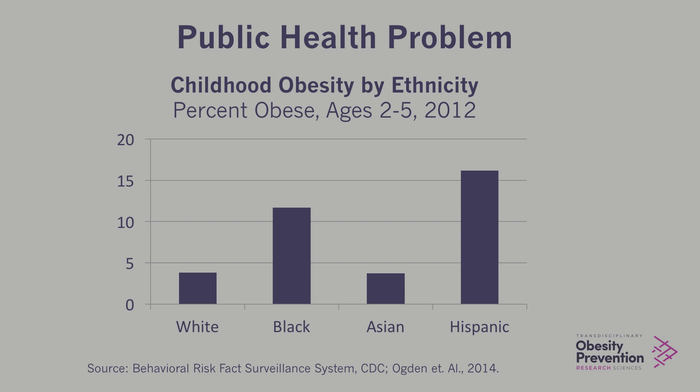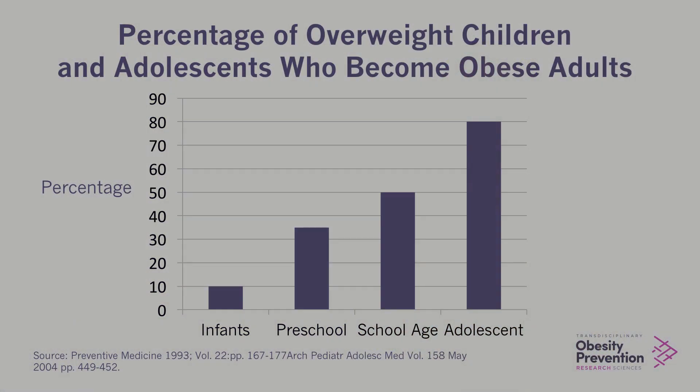So why should we be concerned? Now that we see the patterns and think about the determinants, we want to think about what kind of research should we be doing. One of the main reasons I am focused on childhood obesity is that research has shown that if you are overweight or obese as a child, your chances of being overweight or obese as an adult increases significantly. For example, if you're overweight or obese as a preschooler, your chances of being overweight or obese as an adult is 35%. This is why we find it really important to start working with children earlier to develop habits they can carry through adolescence and adulthood to reduce their risk.